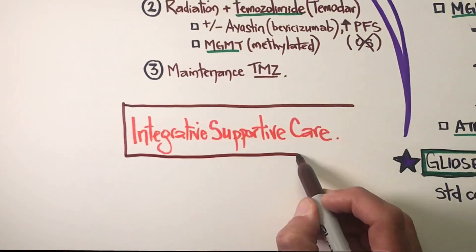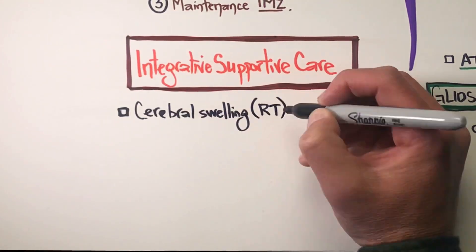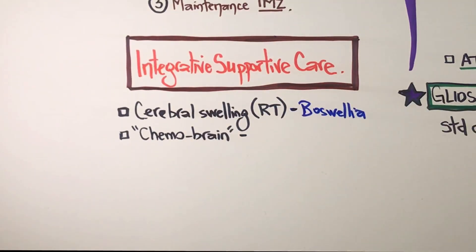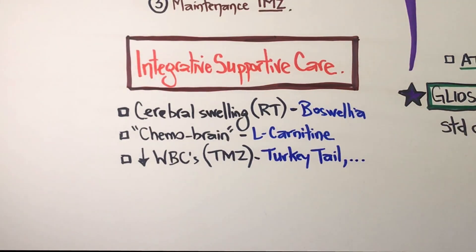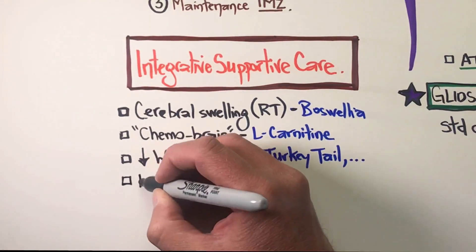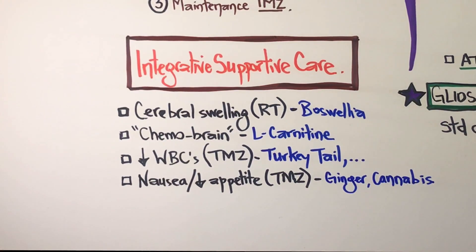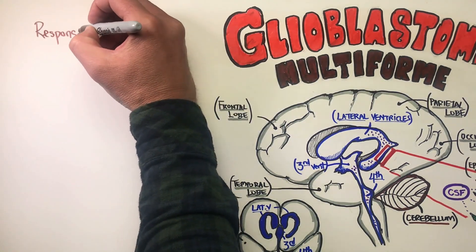There is so much you can do to protect yourself through these therapies, to protect your quality of life and maintain your ability to stay on treatment. Cerebral swelling is common after surgery and radiation — the herb Boswellia or frankincense can be used; clinically, the milligrams are well-established. For chemo brain, we use L-carnitine. White blood cell counts can drop on temozolamide — many mushrooms can help, such as turkey tail. For nausea and appetite, ginger and cannabis are very effective. Bowel changes can vary from constipation to diarrhea, and there's much you can do to stay strong on standard treatments.